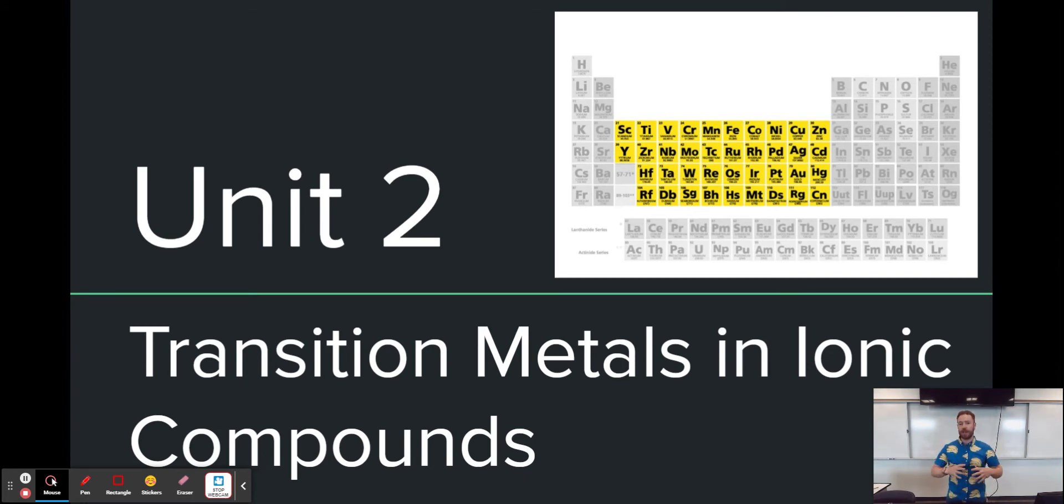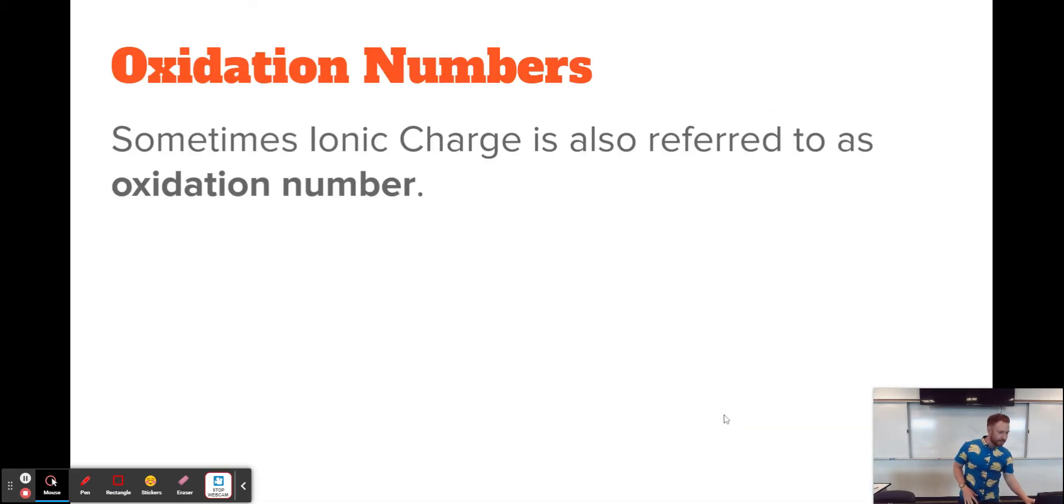So we're going to talk a little bit about those transition metals. Because transition metals can form ions. They can be cations or positively charged ions. And so when that's the case, we need to use that information. And we need to know how to use the information or to portray the information about what their charge is.